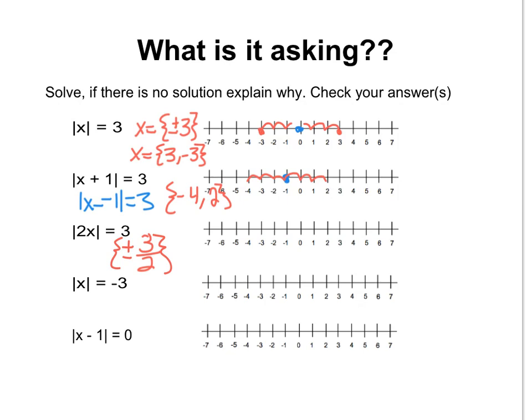Then we have the absolute value of x equals negative 3. That's saying what number is negative 3 units away from zero? That's impossible, so we write no solution. And finally, the absolute value of x minus 1 equals zero. That's saying what number minus 1 is zero units away from zero? The only number that works is positive 1, because when we subtract 1 we get the absolute value of zero. So in this case, we only have one solution, and that is 1.